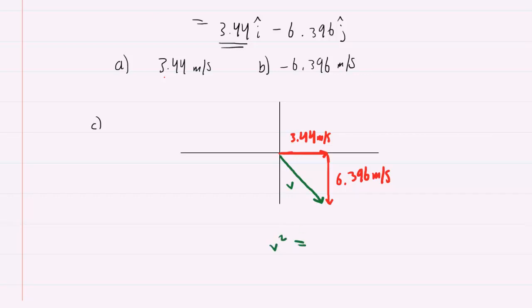We'll have v squared is equal to 3.44 squared plus the 6.396 squared. If you compute the quantity on the right-hand side, you will get v squared is equal to 52.74.